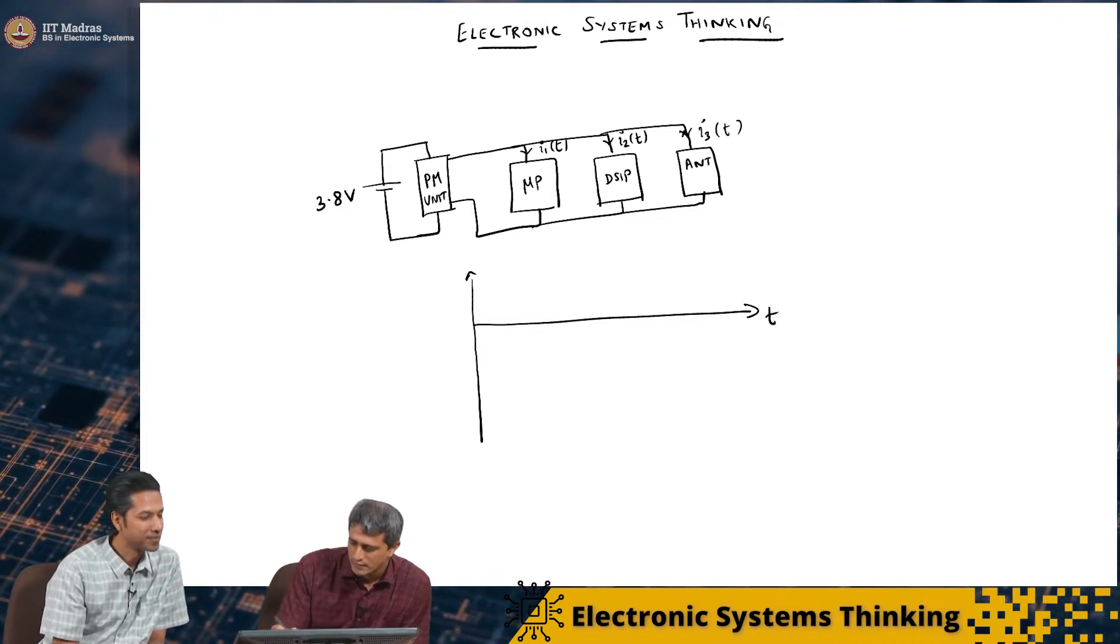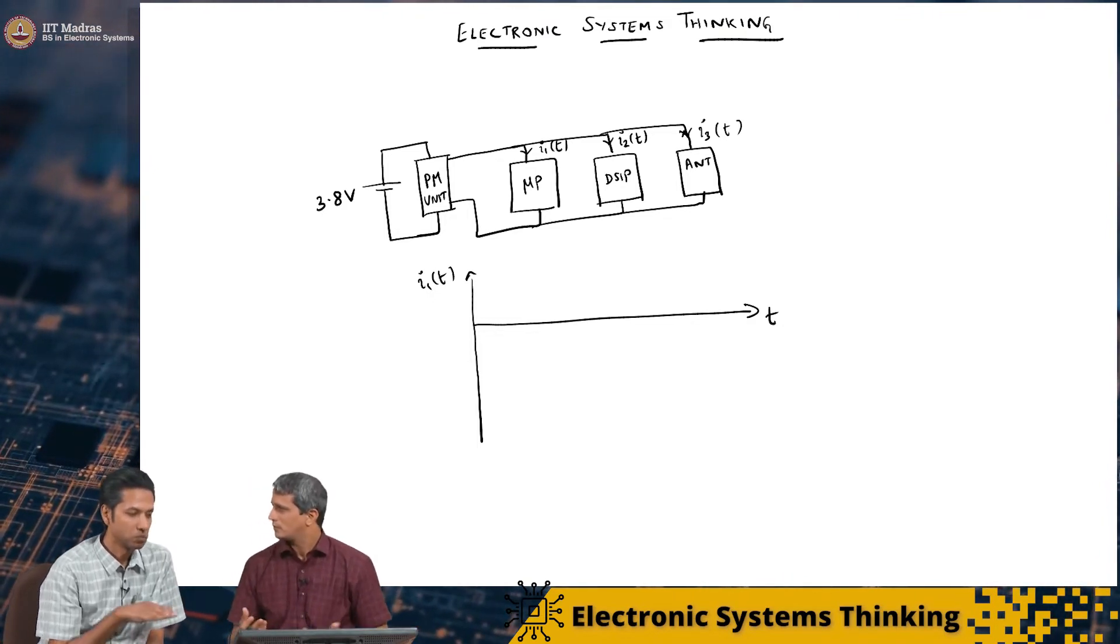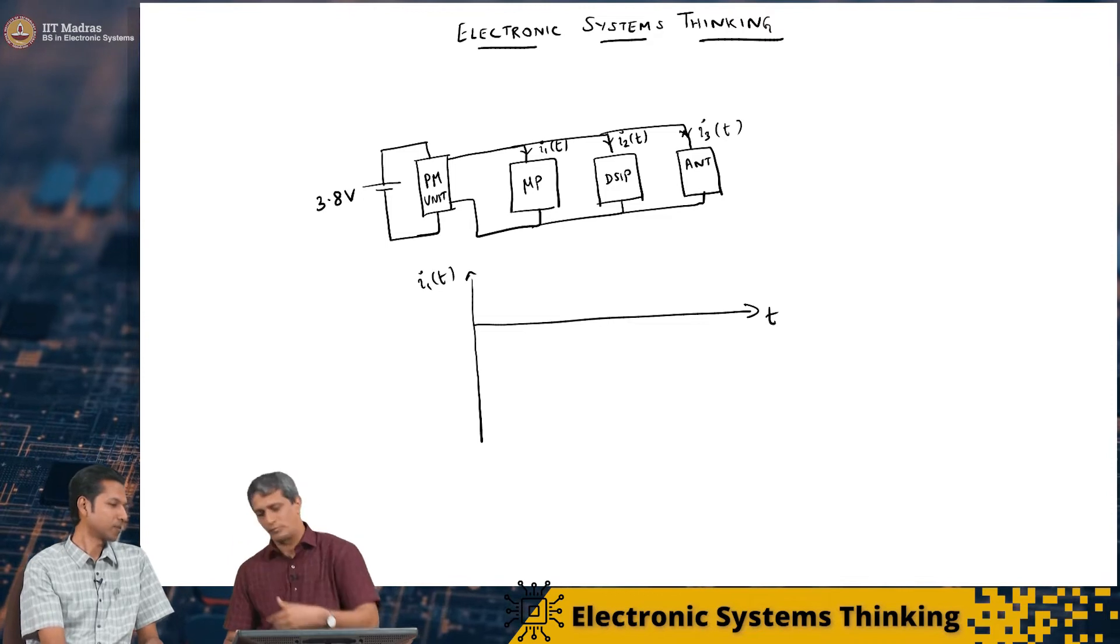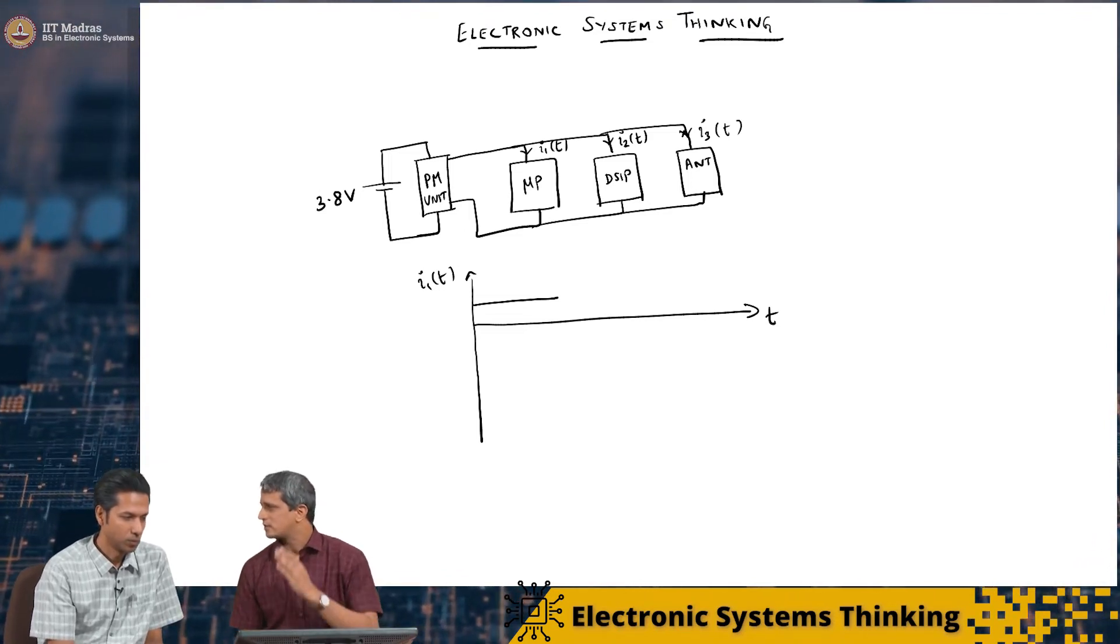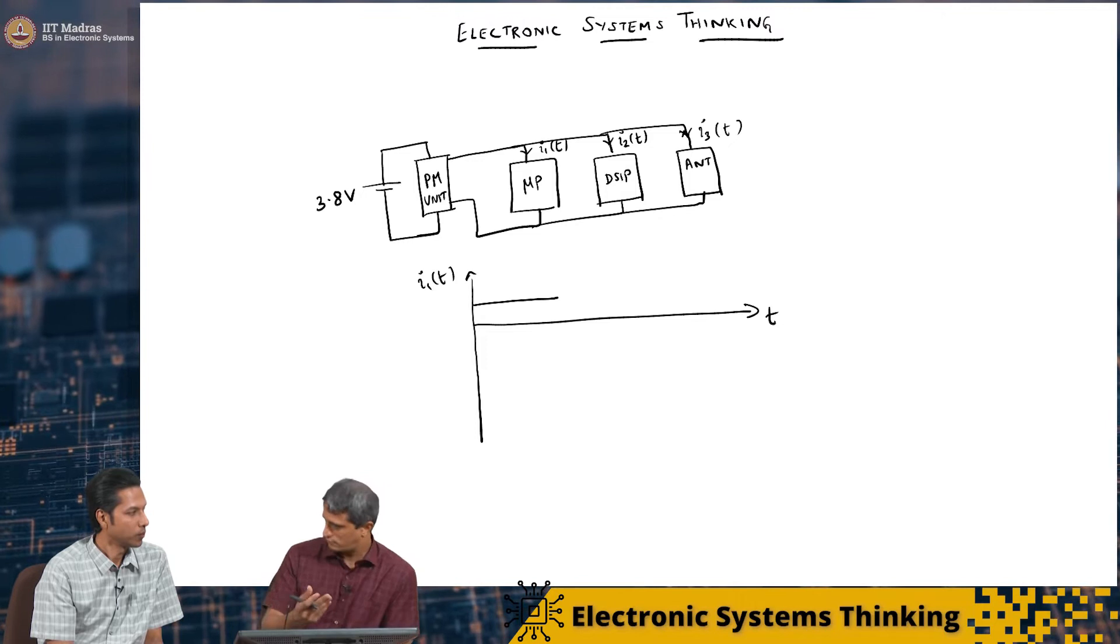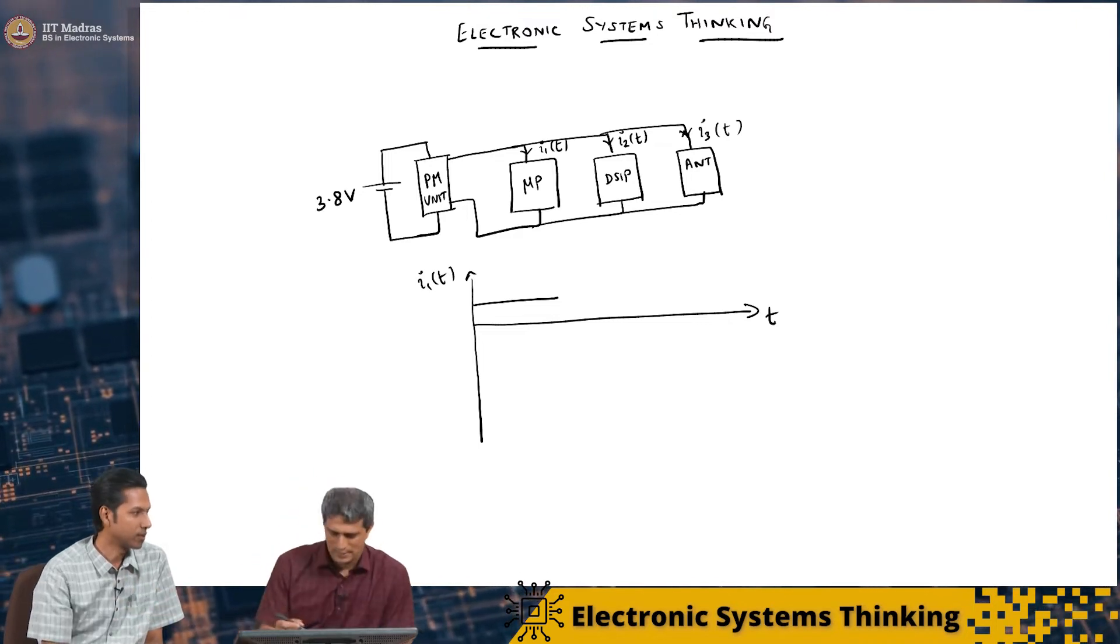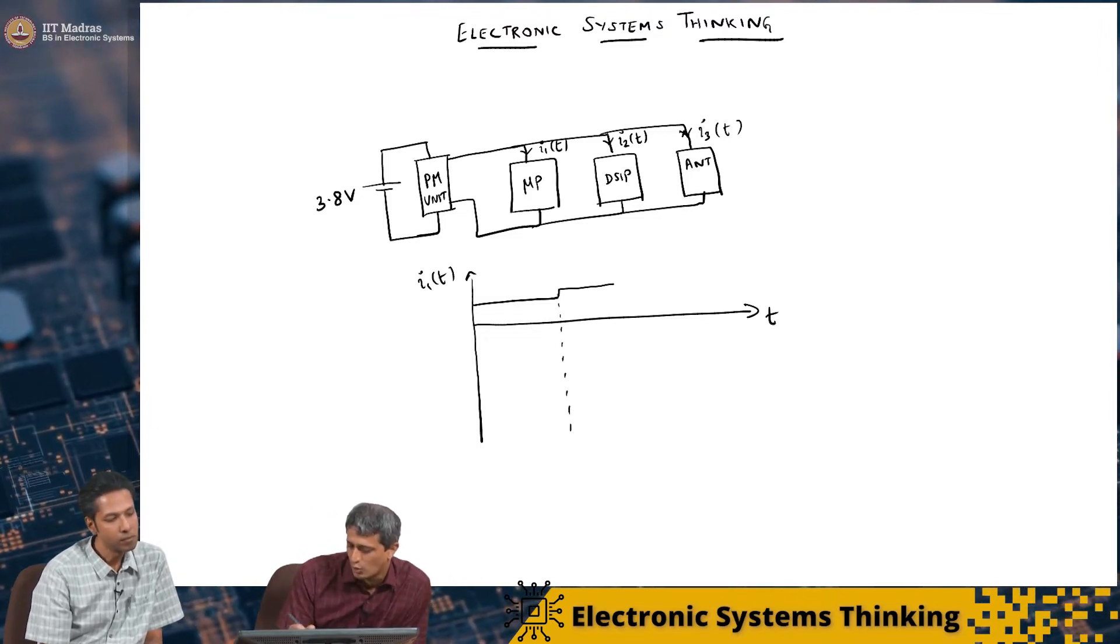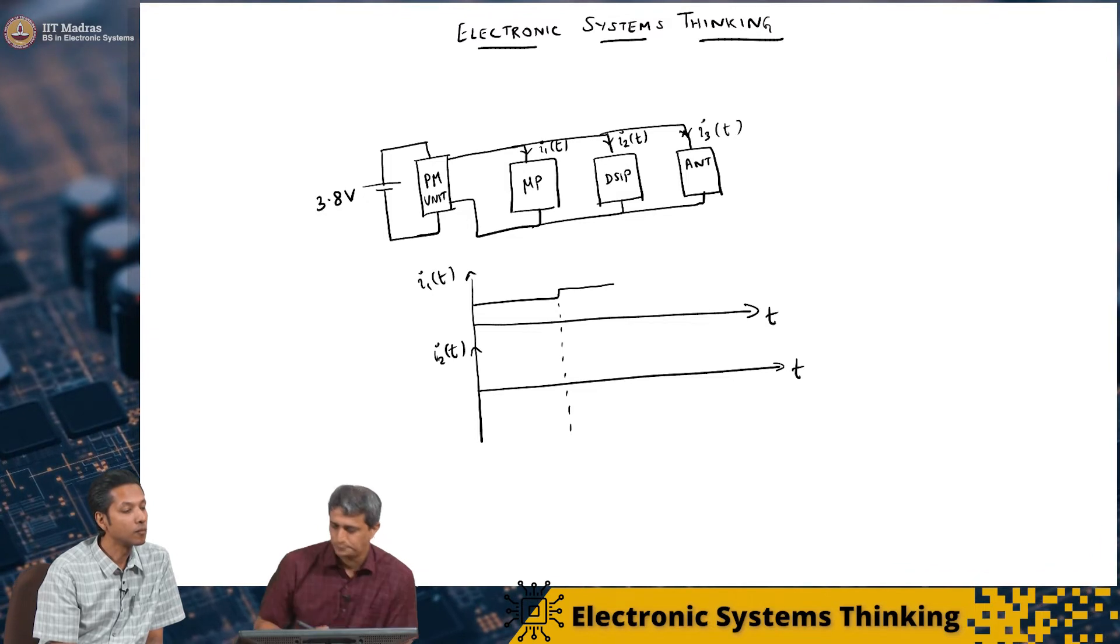So those are software decisions where the operating system is saying, okay, I need to cut off all these activities, applications. But there's also hardware control like we saw the display. So the power management unit will pass this information to the operating system, some processing will be done and then a decision will be sent back. And accordingly the power will be turned on, turned off for various blocks. So you have I2 of t and you have the antenna system which is basically going to be some I3 of t. So let's try to hypothetically sketch what would have happened in this process for the I2 of t, for I1, I2 of t and all that.